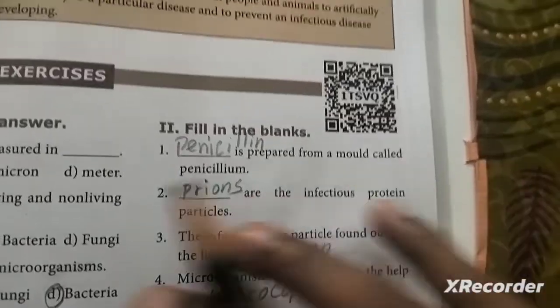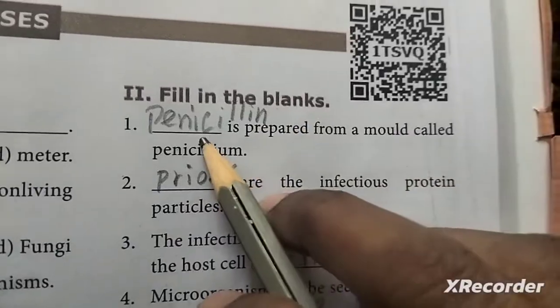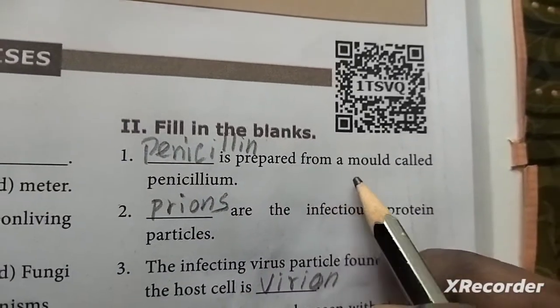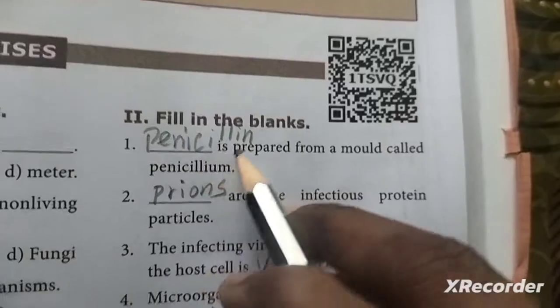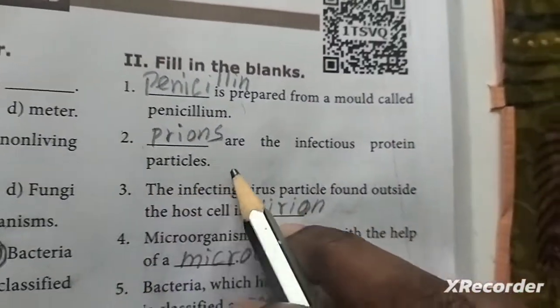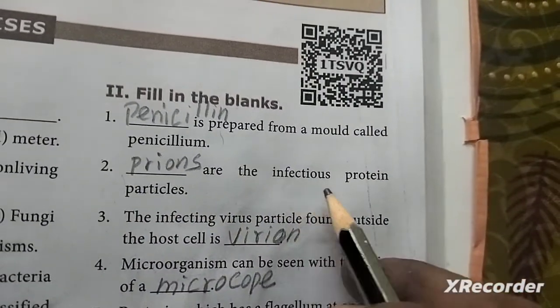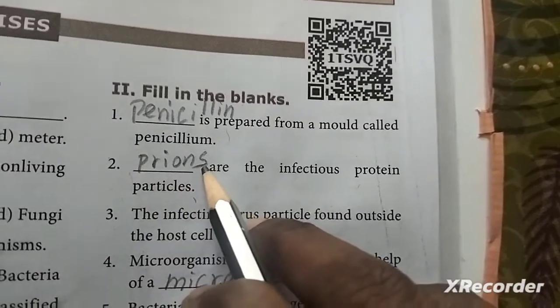Next one: fill in the blanks. First is prepared from a mold called penicillium - penicillin. Second one: are the infectious protein particles - prions.